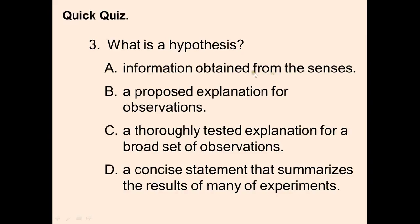What is a hypothesis? A, information obtained from the senses, B, a proposed explanation for observations, C, a thoroughly tested explanation for a broad set of observations, or D, a concise statement that summarizes the results of many experiments. Before we answer this question, let's identify each of these answers. A, information obtained from the senses, sounds like observations. C, a thoroughly tested explanation for a broad set of observations, sounds like a theory. D, a concise statement that summarizes the results of many experiments, sounds more like a scientific law. So the answer would be B, a proposed explanation for an observation.